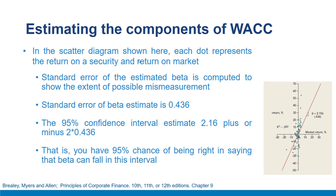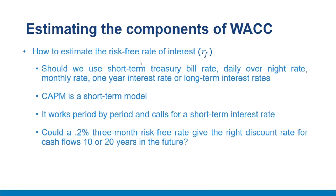There is always a large margin of error when estimating beta for individual stocks. Fortunately, estimation errors tend to cancel out when estimating betas of portfolios. That is why financial managers often turn to industry betas — betas of portfolios of securities from the same industry. The next issue is what value to use for the risk-free interest rate: short-term T-bill rate, overnight rate, monthly rate, one-year rate, or long-term rates — all used in CAPM.